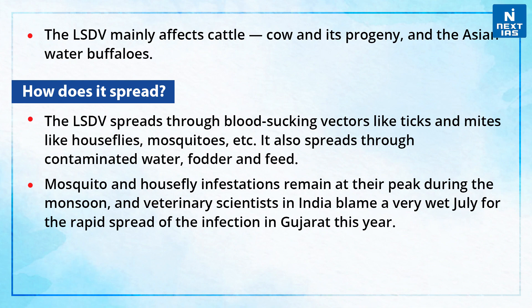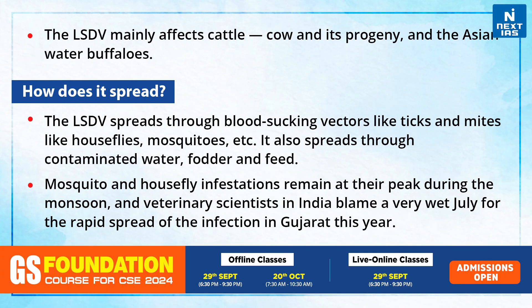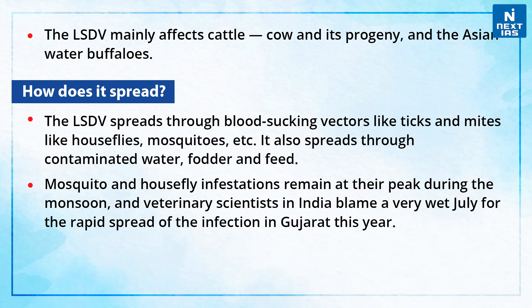Let us discuss how it spreads. The LSDV spreads through blood-sucking vectors like ticks and mites, for example houseflies and mosquitoes. It also spreads through contaminated water, fodder and feed. Mosquito and housefly infestations remain at their peak during the monsoon, and therefore veterinary scientists in India blame a very wet July for the rapid spread of infection in Gujarat this year.